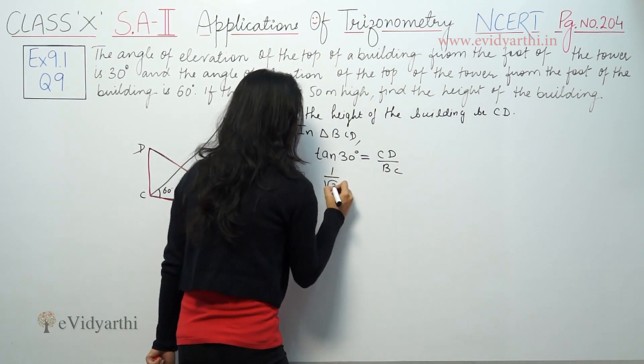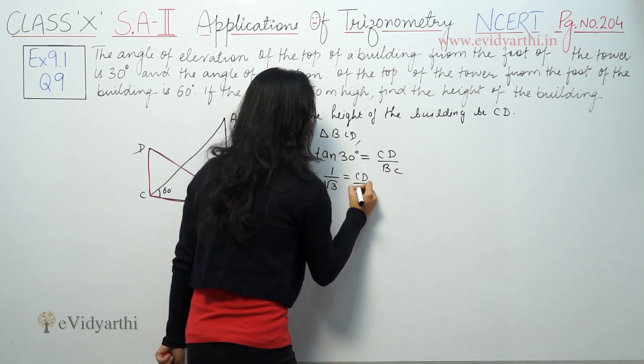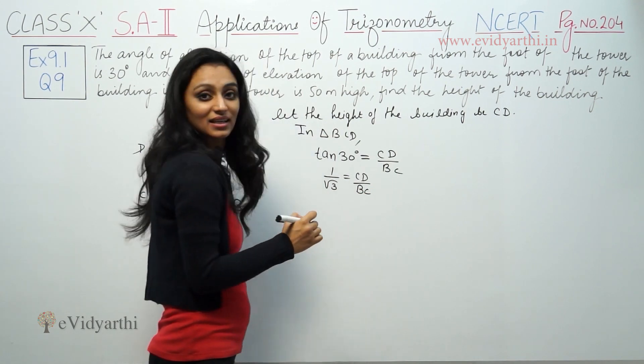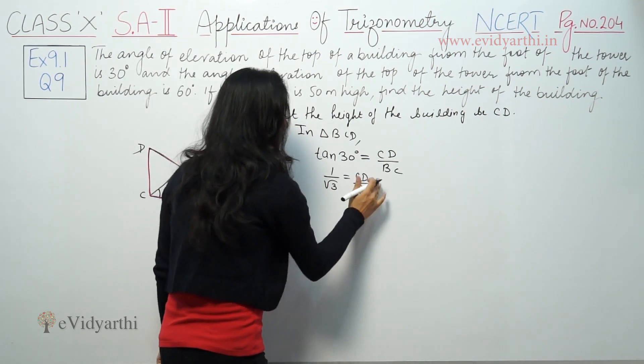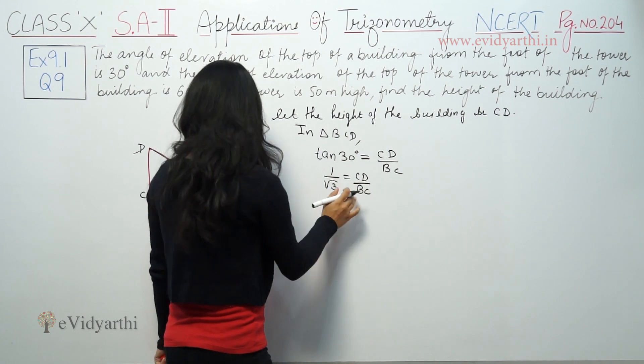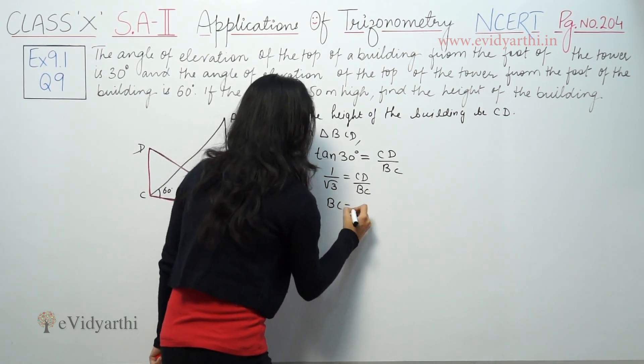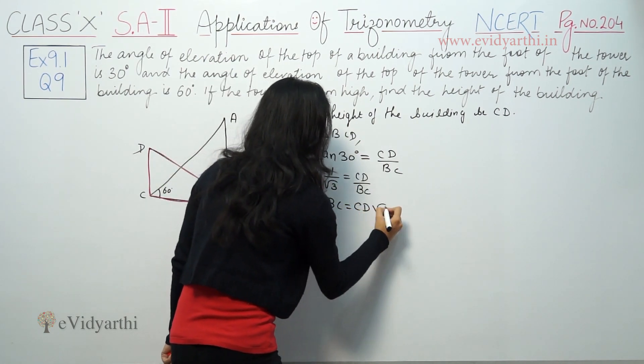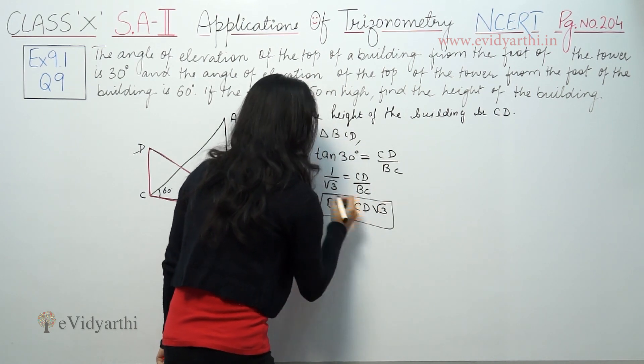tan 30 is 1 by root 3 equals CD upon BC. So CD by BC equals 1 by root 3, which means BC equals CD root 3.